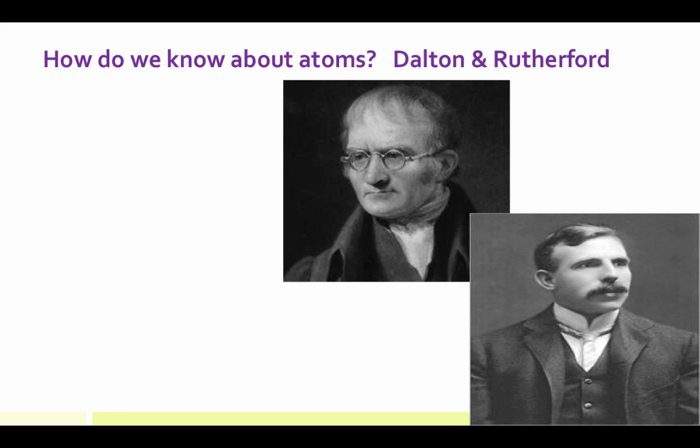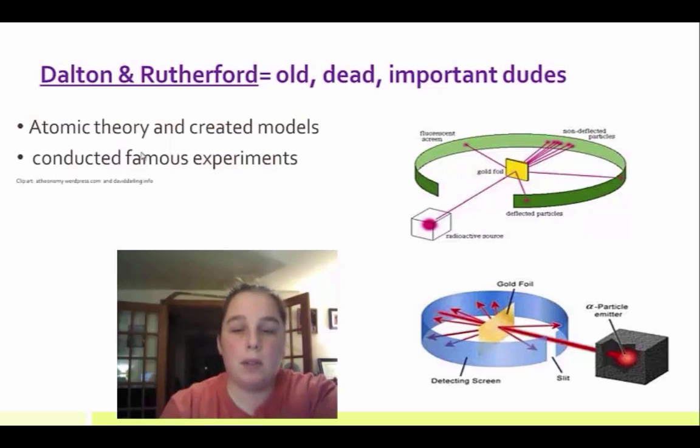So how do we know about atoms? Well, I want you to meet the first two of my old dead dude club. Dalton and Rutherford are two old dead dudes that we're going to study because they made a great contribution to science and really got into what an atom looked like. Because they were the first ones that created models and created some very famous experiments. You might read and hear something about a gold foil experiment. And what it did is it allowed them to understand that atoms were actually comprised of a nucleus and then something that surrounds it called an electron cloud.